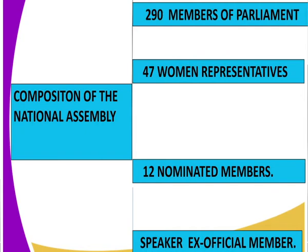So the composition of the National Assembly is: 290 elected members from the constituency level, 47 women representatives from the county level, 12 nominated members representing those in society with disabilities and the youth, and finally the Speaker who is an ex-officio member. The Speaker is elected by the 290 Members of Parliament — they are the ones who vote to elect the Speaker.